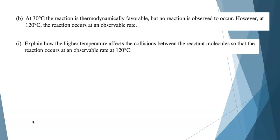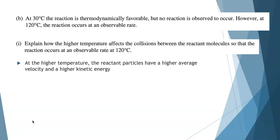Let's look at the question. Explain how the higher temperature affects the collisions between the reactant molecules so the reaction can occur at an observable rate. Here's what you need to be thinking: At the higher temperature, the reactant particles have a higher average velocity and higher kinetic energy because the temperature has gone up. They're moving quicker, which means they're going to collide more frequently and with greater force.